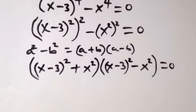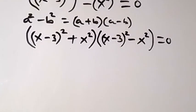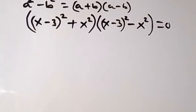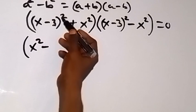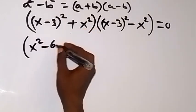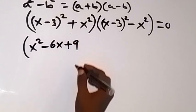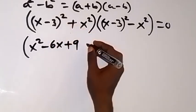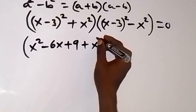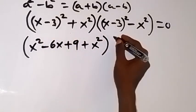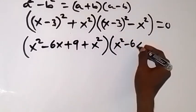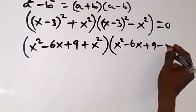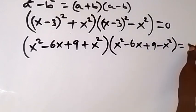Now we can simplify what we have in each bracket. Expanding the first bracket gives us x squared minus 6x plus 9 plus x squared. For the second bracket, we have x squared minus 6x plus 9 minus x squared, equals 0.